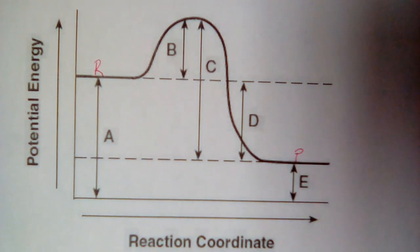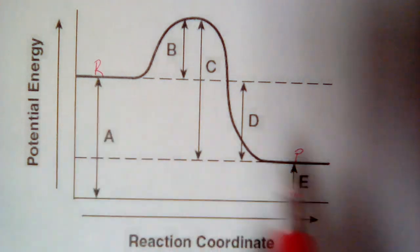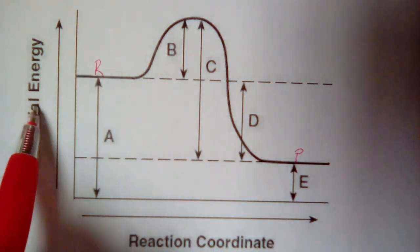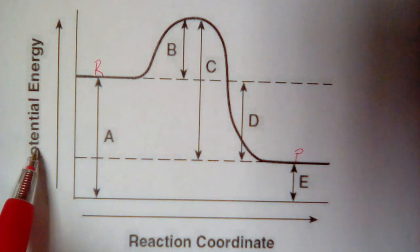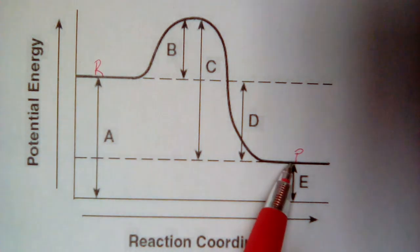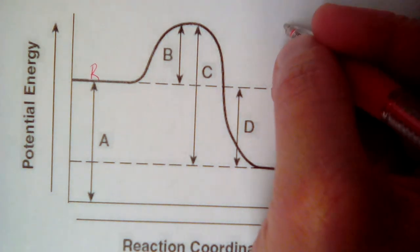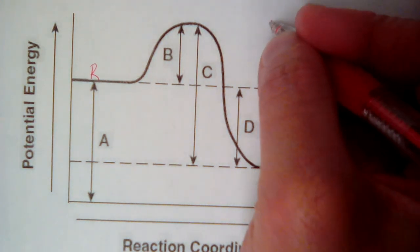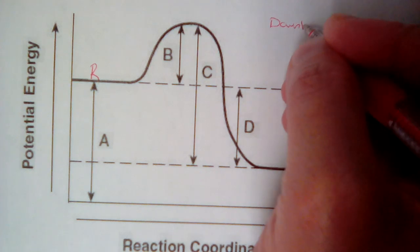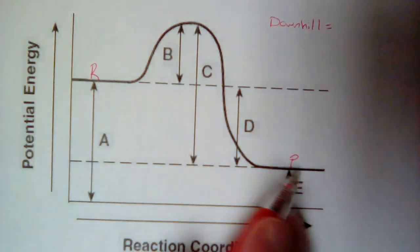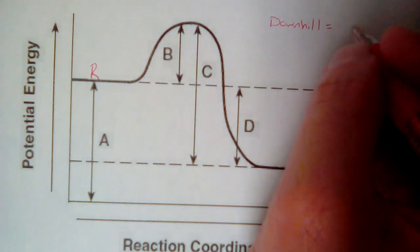Over on the right side, you find your products. So we look at the relative energies of our reactants and products. And we can see our reactants have more potential energy than our products do. This is what we would call a downhill reaction. A downhill reaction is exothermic. So again, you look at your energy, you compare your reactants and products, and if you're going down, it's exo.